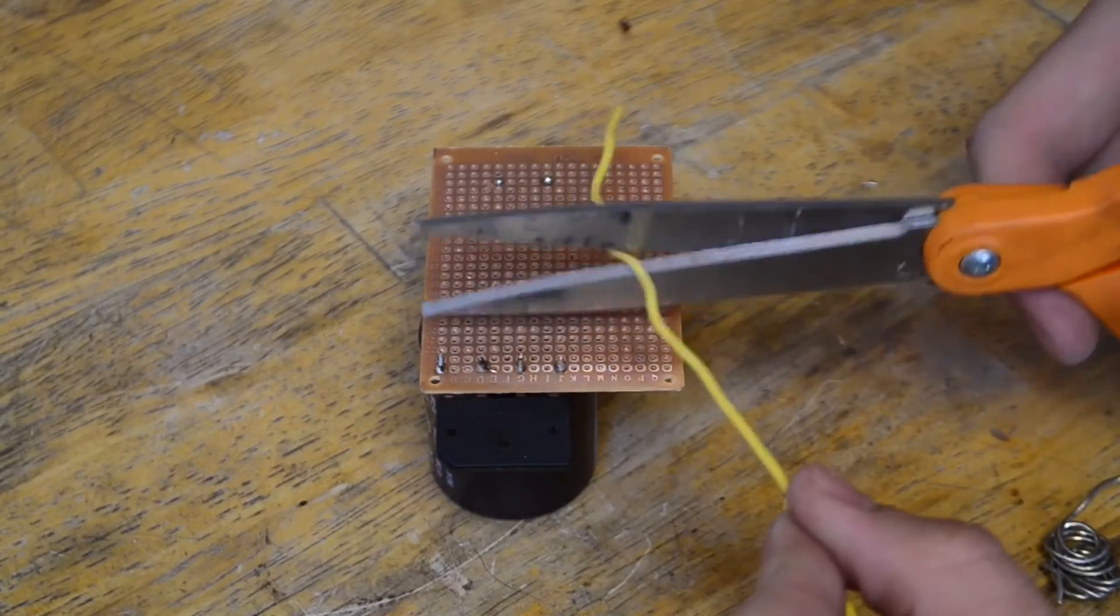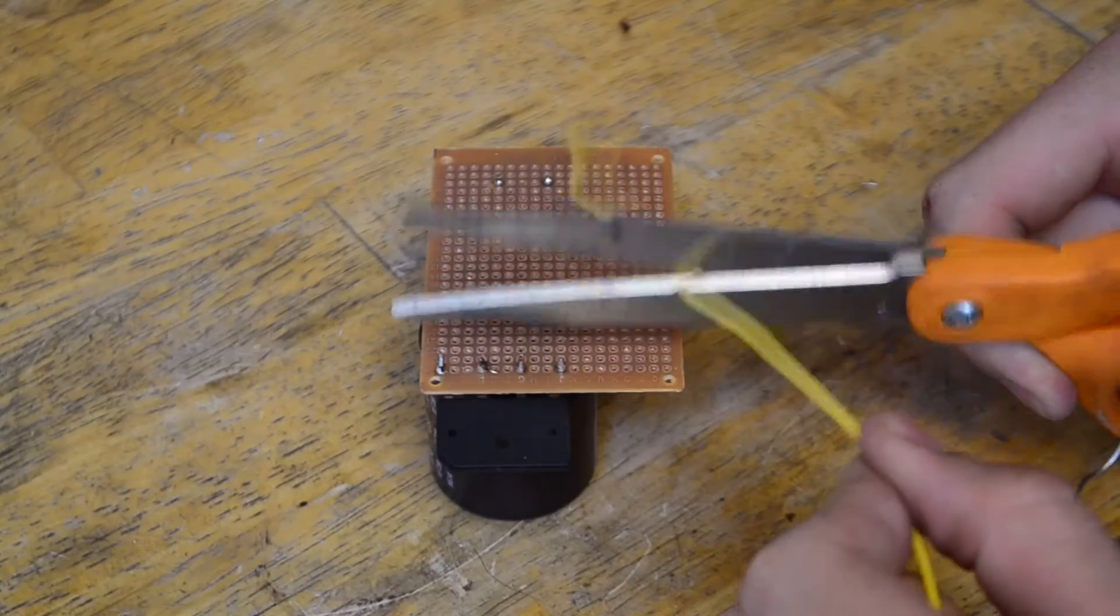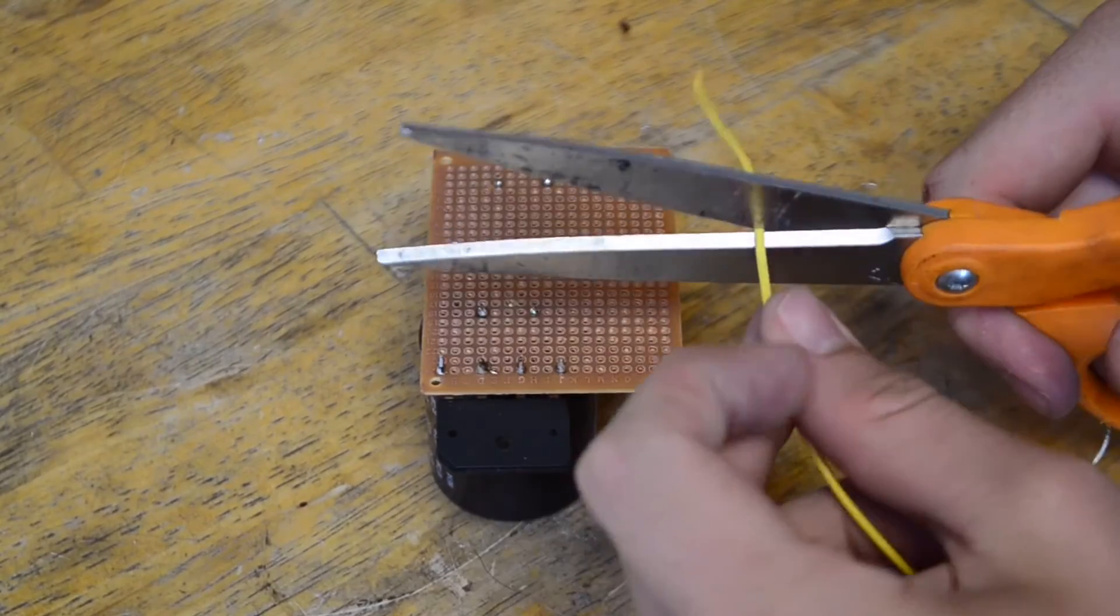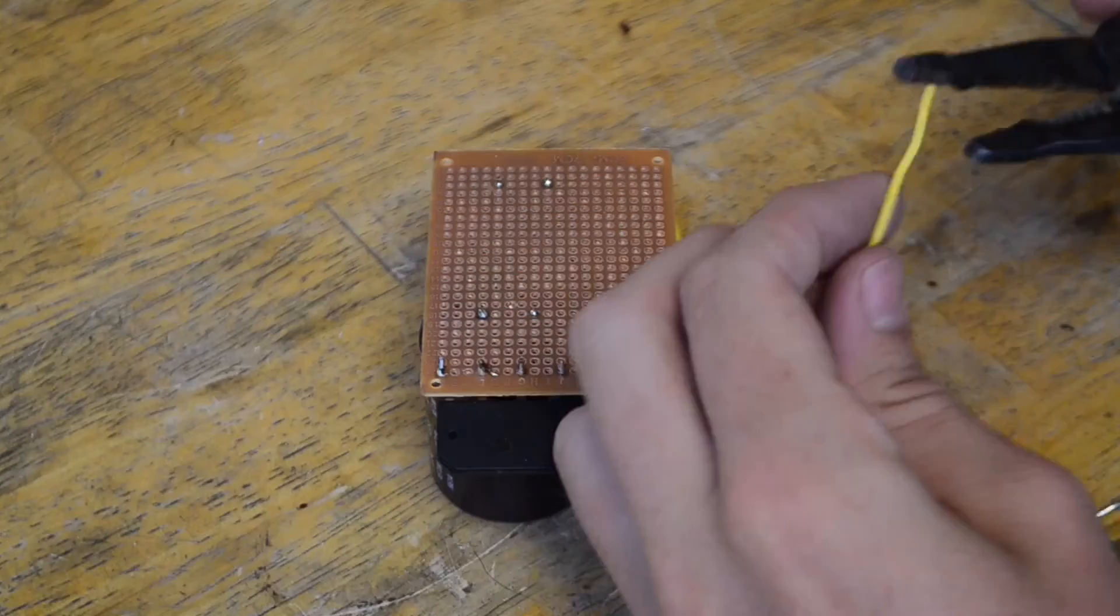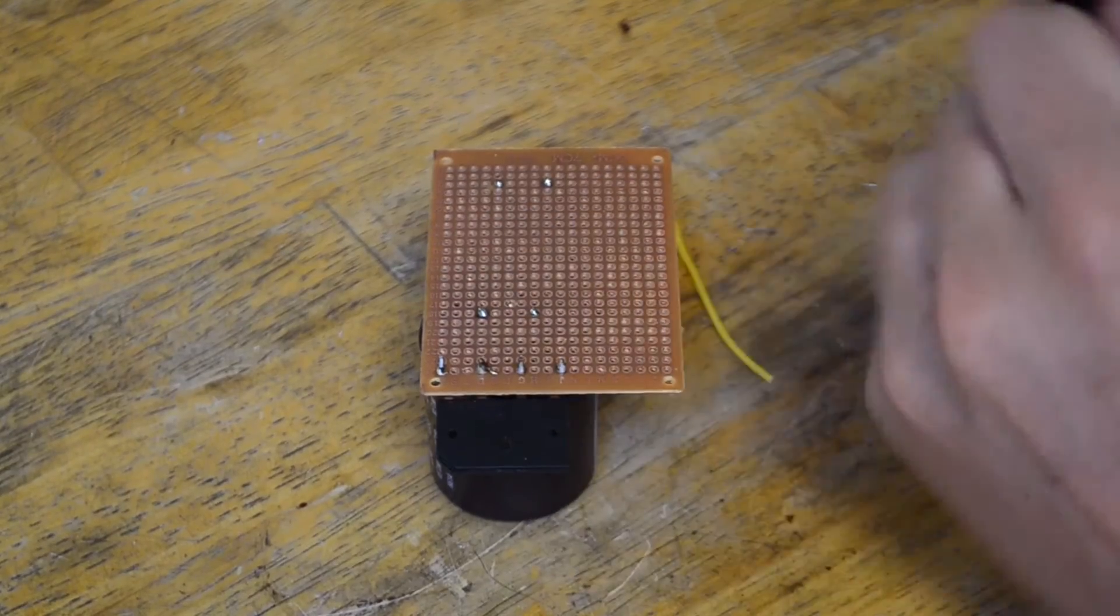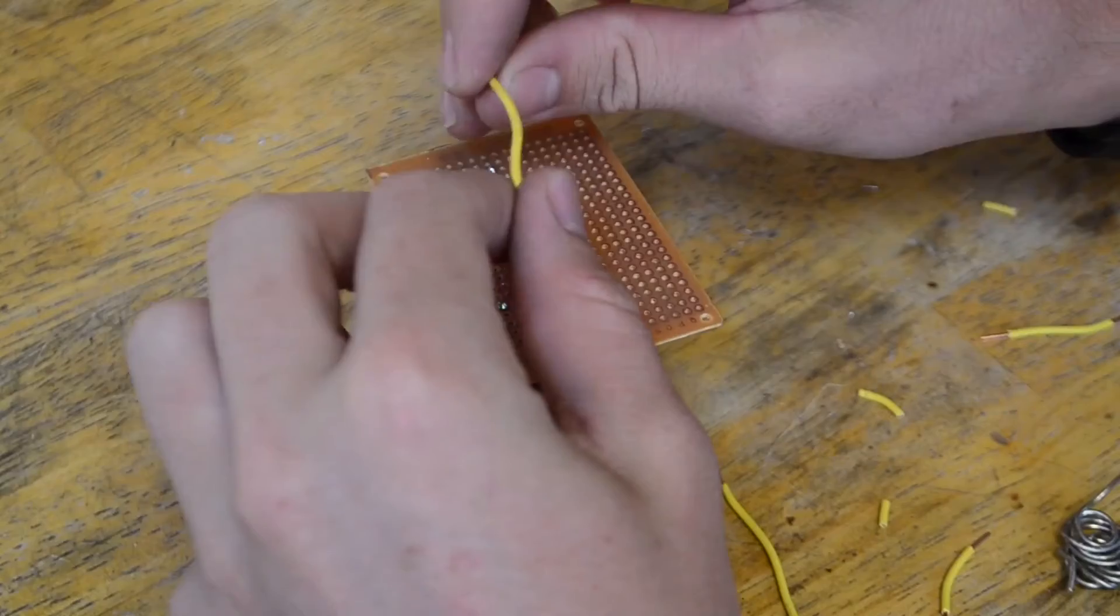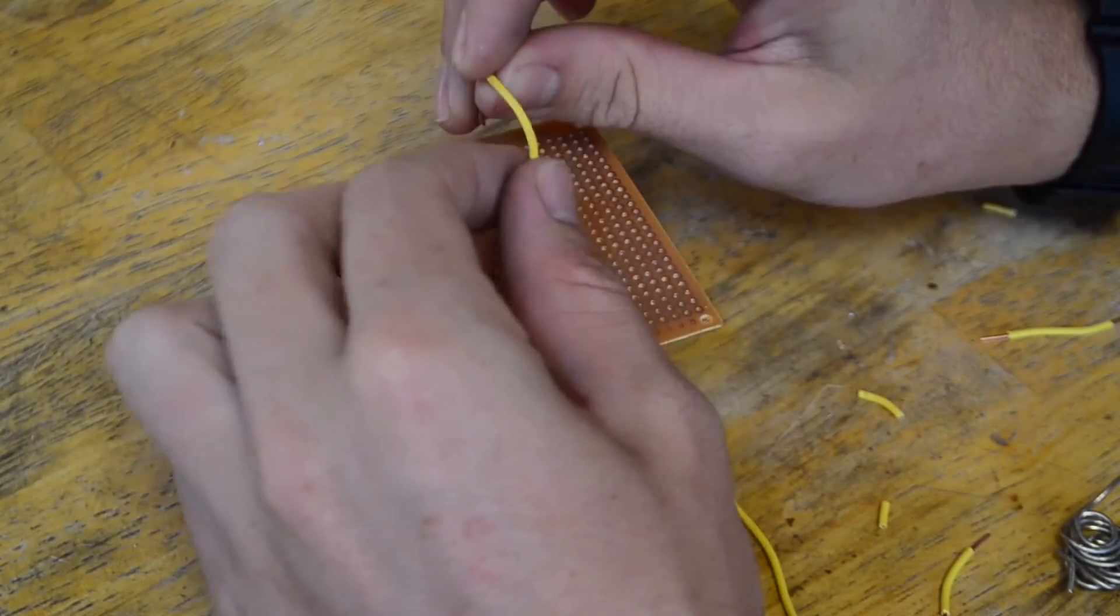Alright, so now that we have that done, I'm going to go ahead and snip off some lengths of wire and go ahead and strip it down. And now we're going to use these wires to connect the negatives to the negative and the positives to the positive.